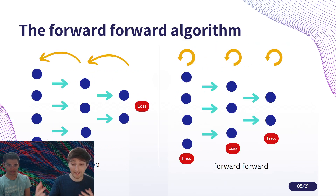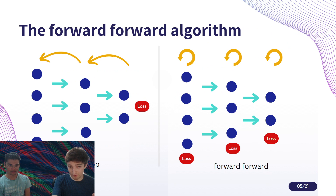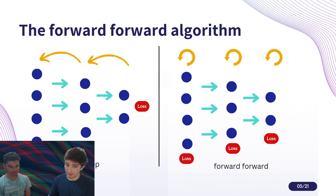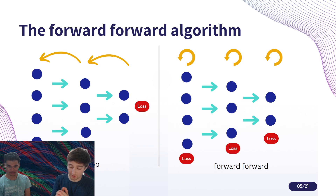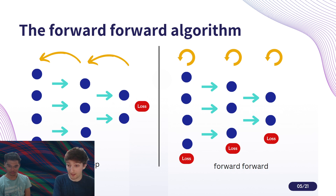So what is the forward-forward algorithm? First, let's look at backpropagation. The idea is you have activations which you flow through the network, where you then calculate a loss and use that to get a derivative, which you pass backwards layer by layer through the network. Now with the forward-forward algorithm, we actually calculate a loss at each individual layer.